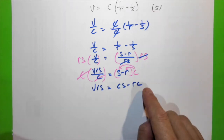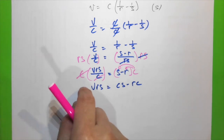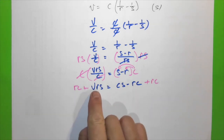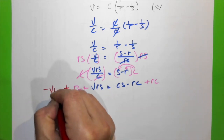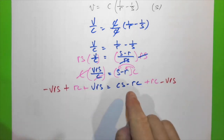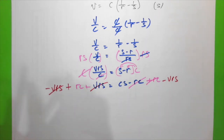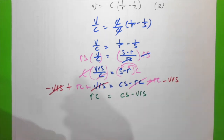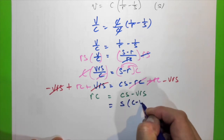Since we want s as the subject, I add rc to both sides and subtract vrs from both sides: rc = cs − vrs. Factorizing the right-hand side, s is the common factor: rc = s(c − vr).